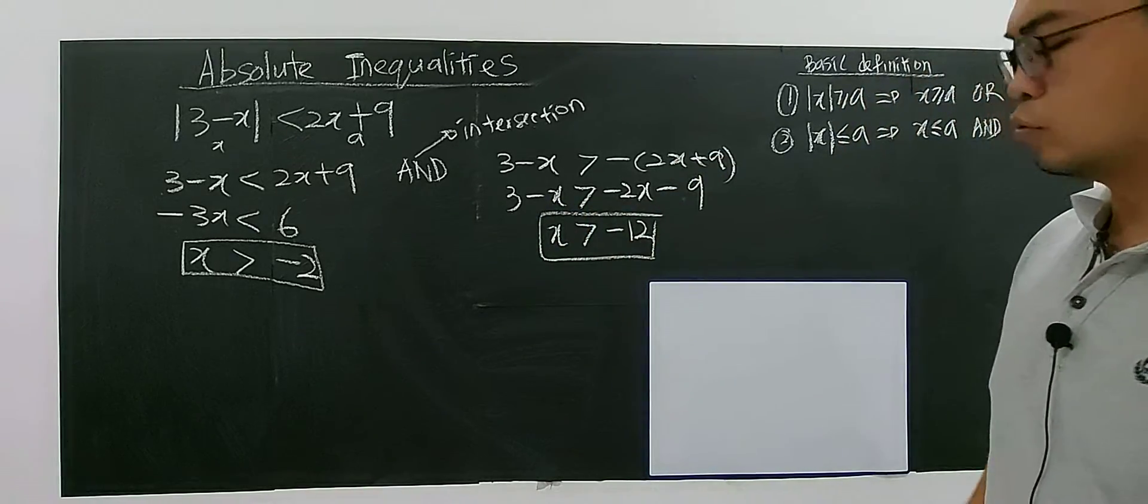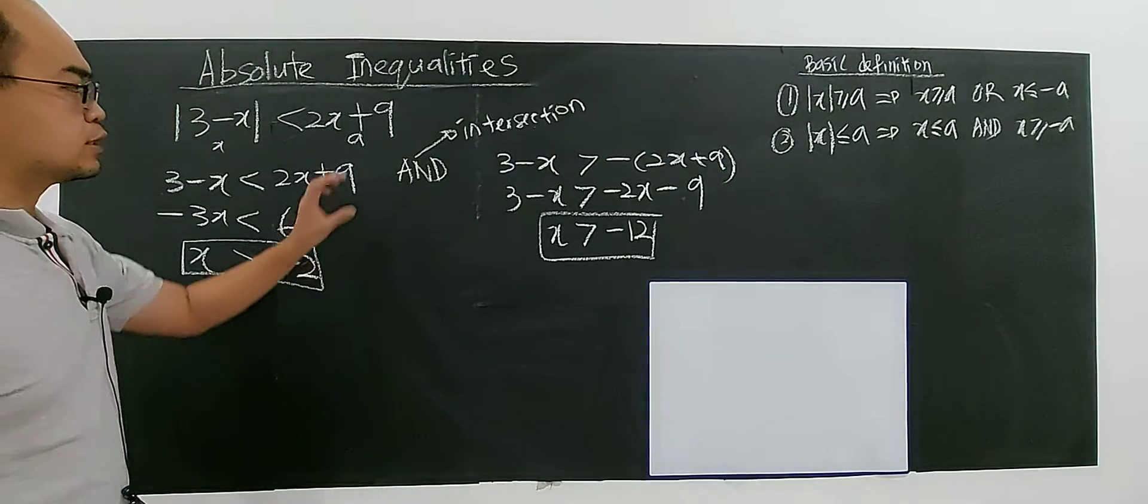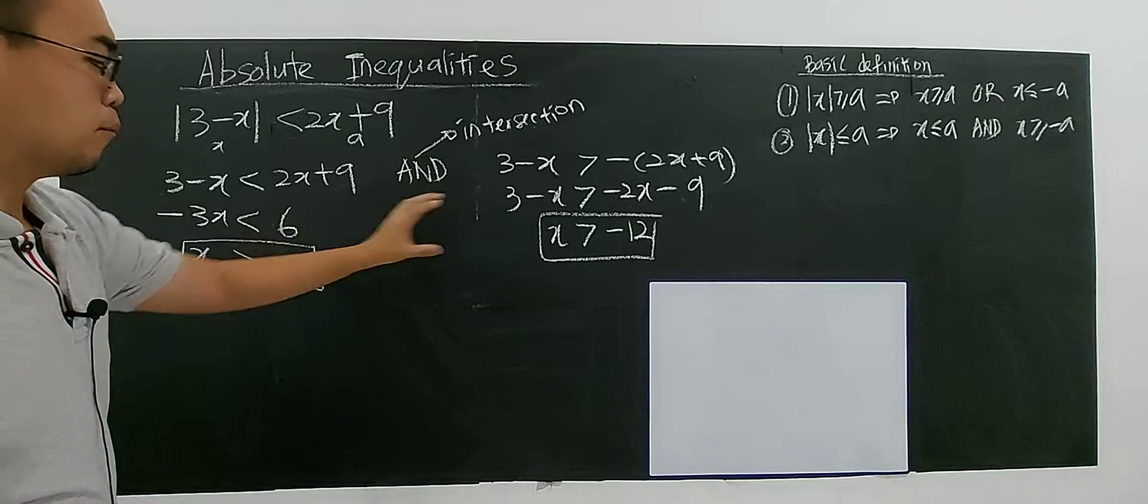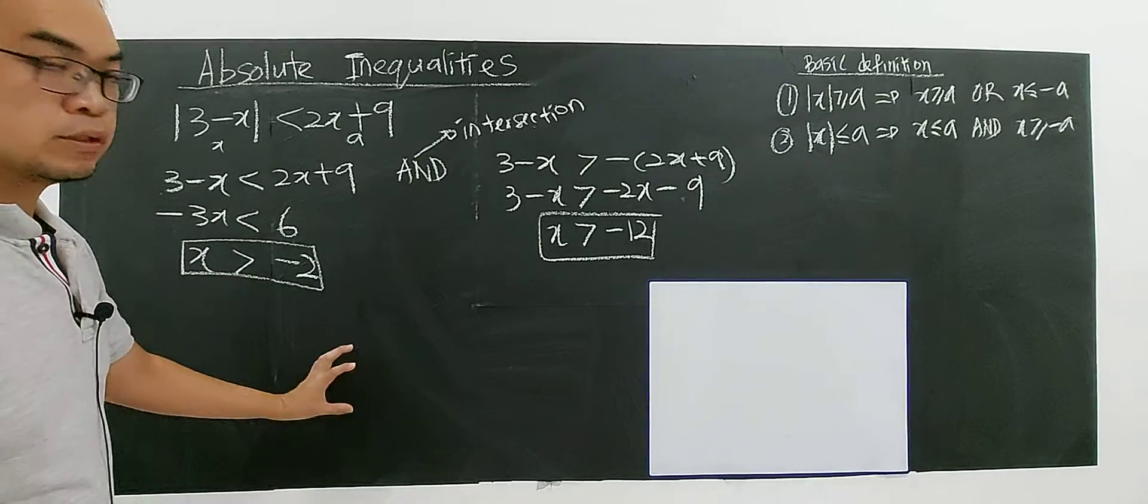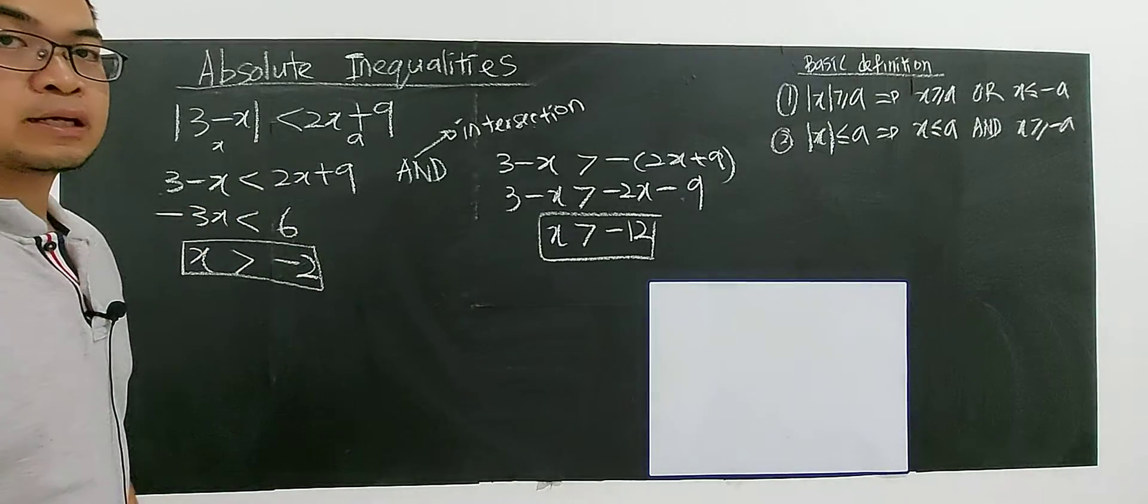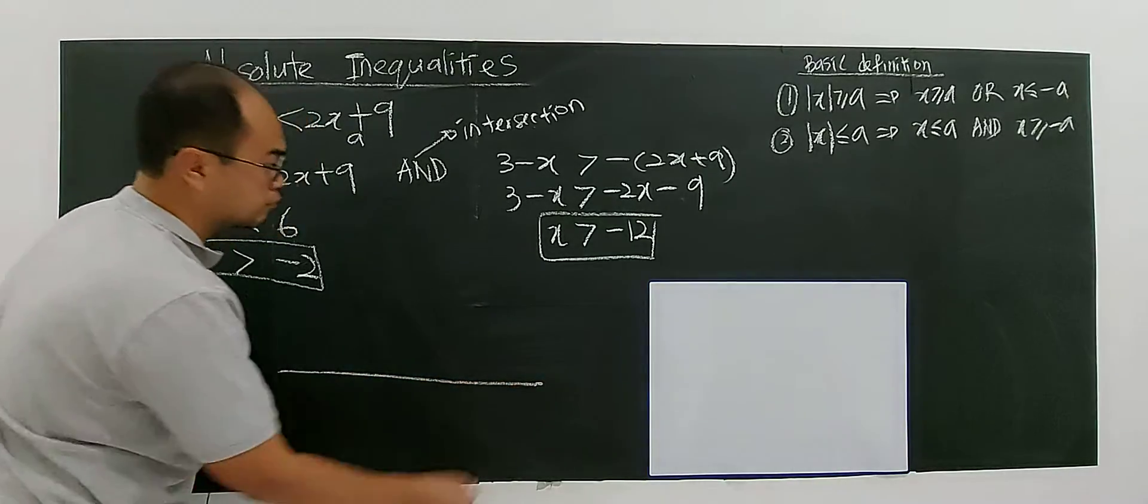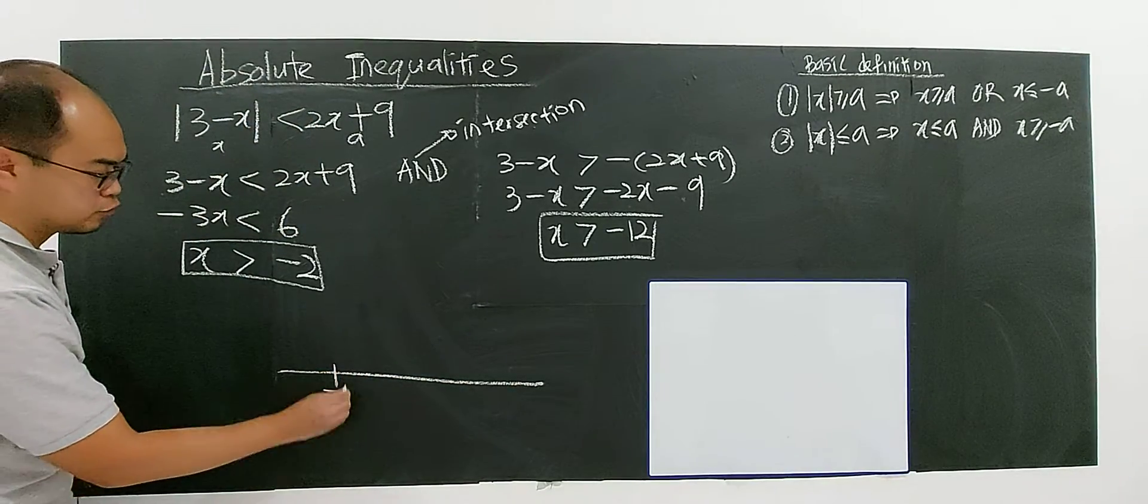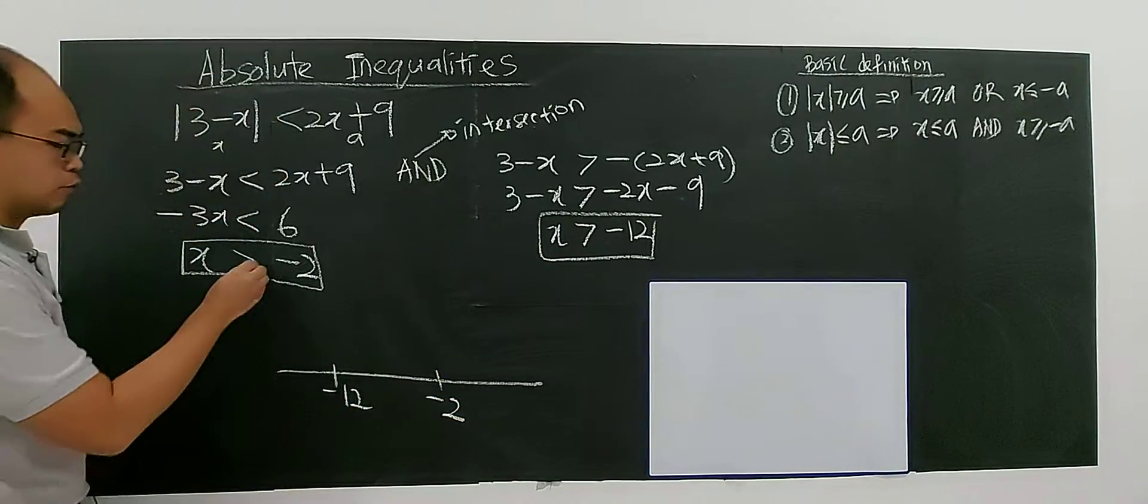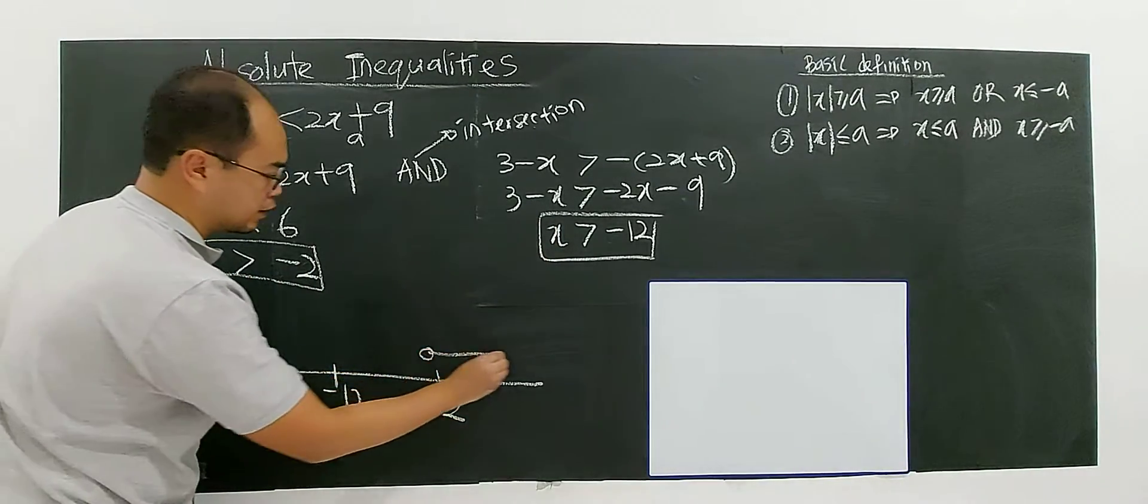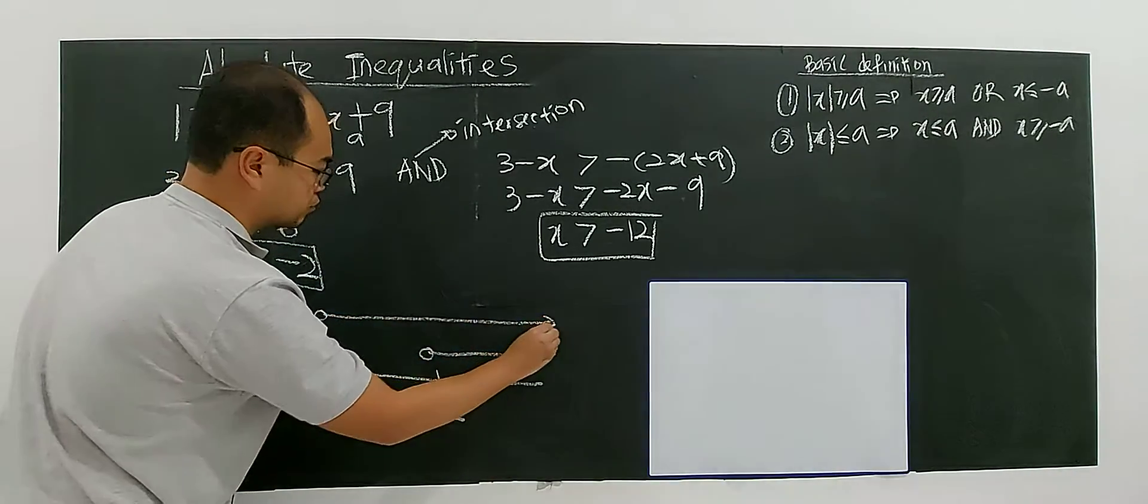So now you have 2 solution. But this 2 solution, you're going to see the operation here. You need to combine these 2 solution and to conclude the final solution for this absolute inequalities. So how? You're drawing a number line. And you put negative 12, all the numbers, negative 12, negative 2. Okay, 1 will be greater than negative 2. 1 will be greater than negative 12. So,